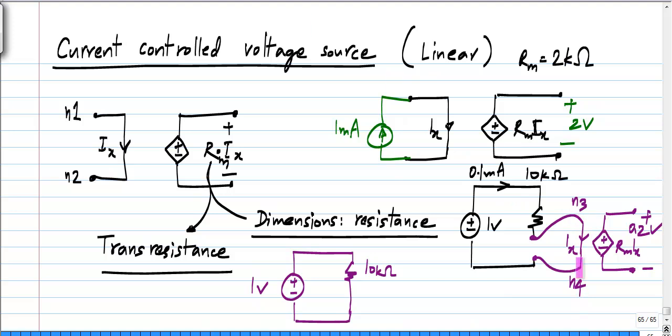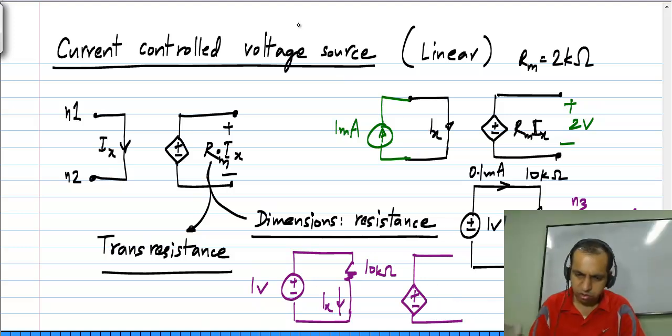The input wire or the input branch of the current controlled current source is placed in series with the resistor to sense its current. What is normally done is to simply label this as the current Ix and have a voltage source Vx which is defined as Rm times Ix. So this is how it is usually denoted.